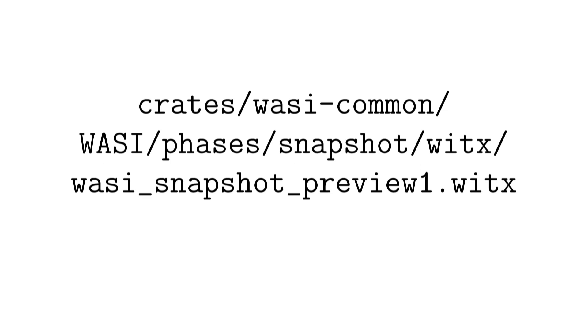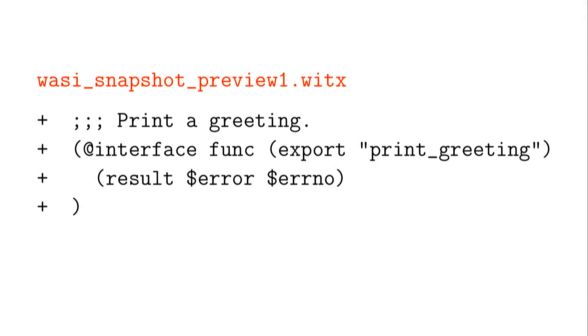If you're trying to hack at the kernel level, step one is making sure you can compile the code — maybe modify the kernel to print something on boot. We can do something similar with WebAssembly interface types and WasmTime. Let's start by modifying WASI snapshot preview one and adding a new function to print a greeting. It's an interface function named print_greeting, exported as a function. It does nothing and returns an errno — because all good functions might potentially fail, even printing hello world.